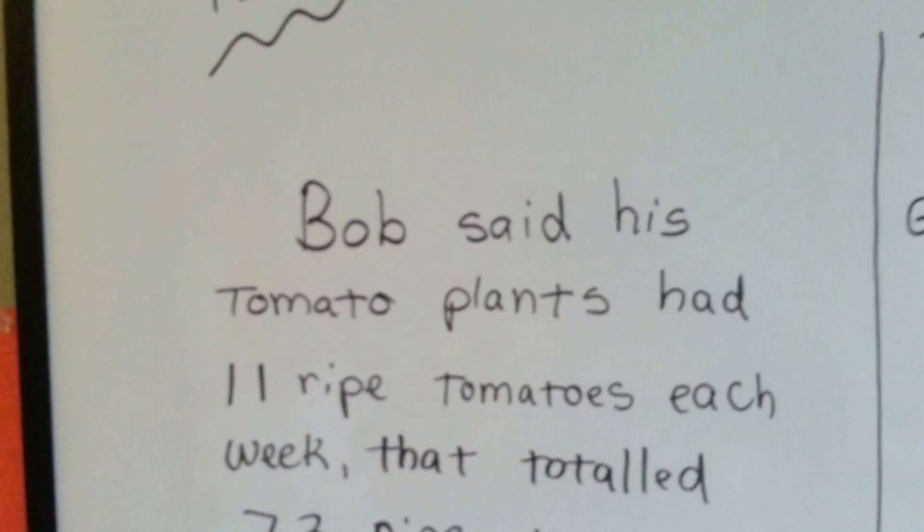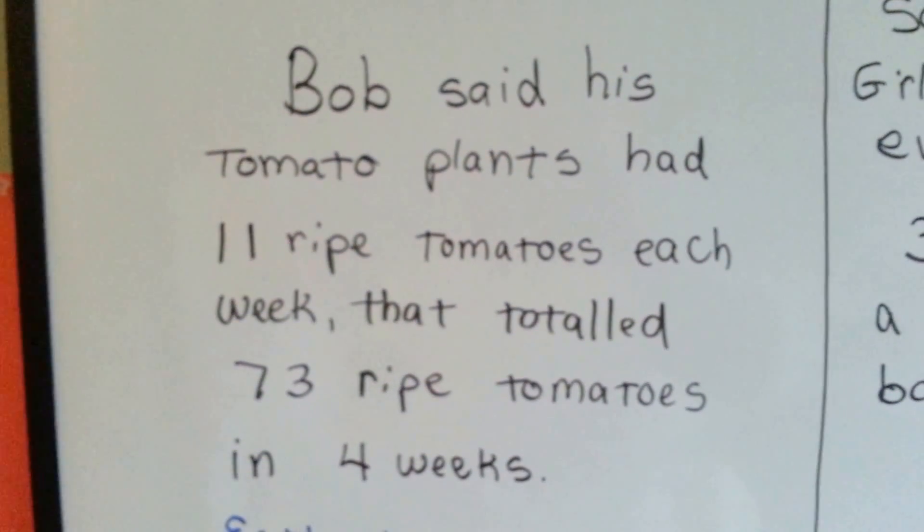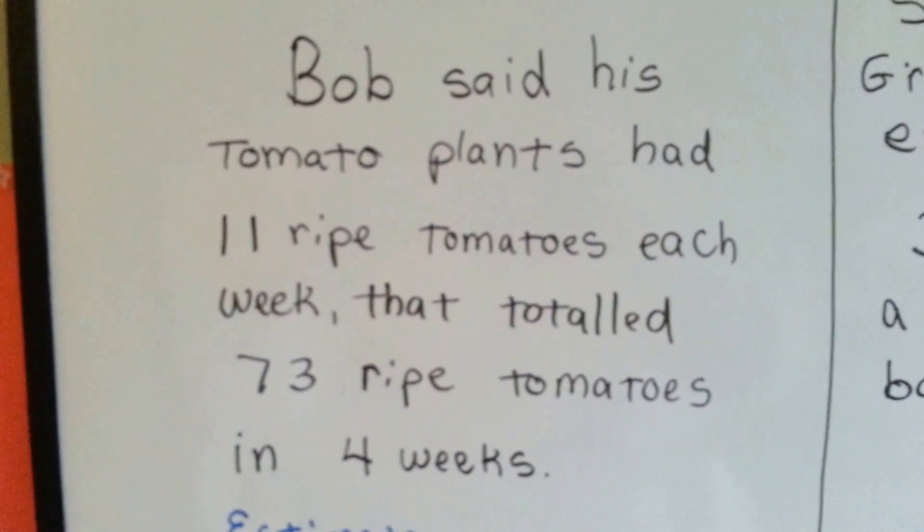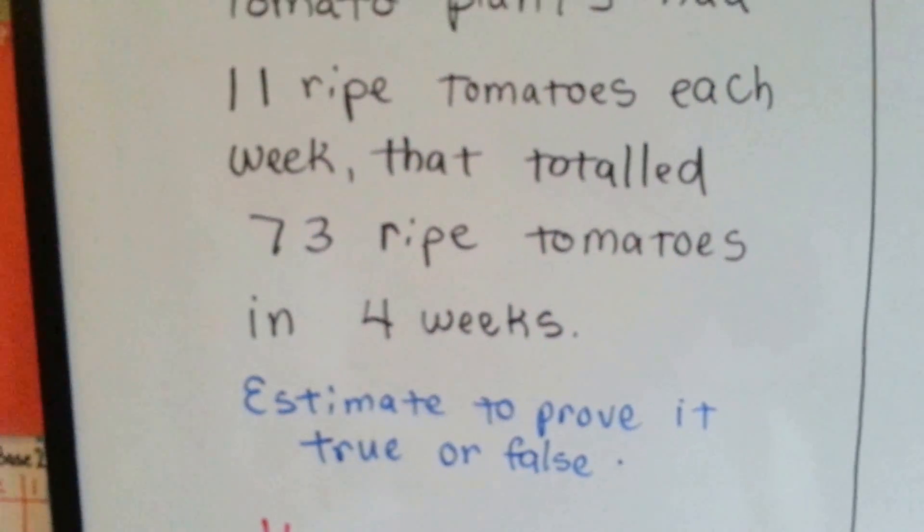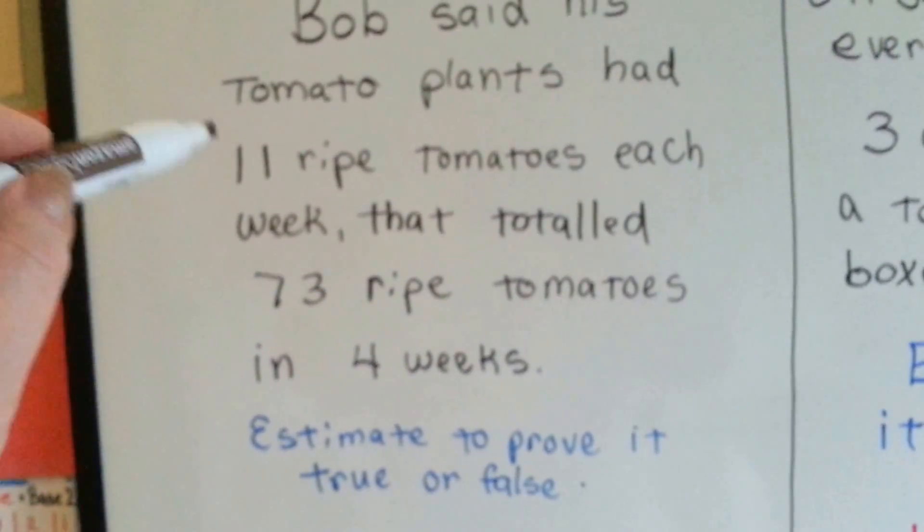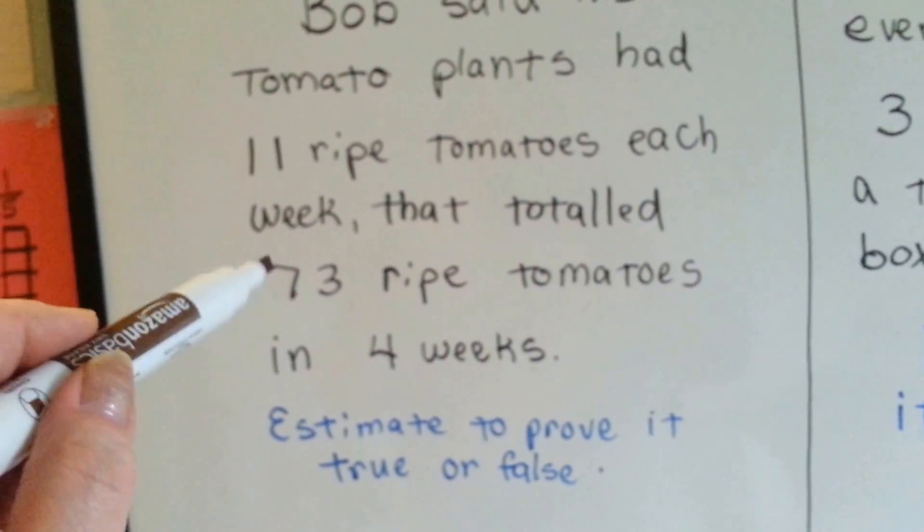Let's see if these people are telling the truth or make sense. Bob said his tomato plants had 11 ripe tomatoes each week. That totaled 73 ripe tomatoes in 4 weeks. So estimate to prove true or false. 11 tomatoes each week for 4 weeks is 73?